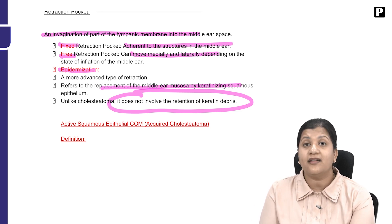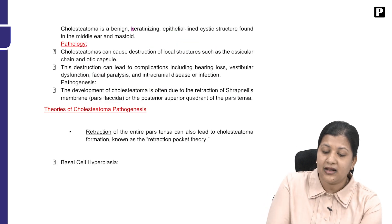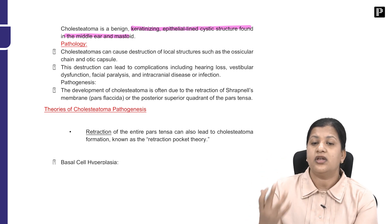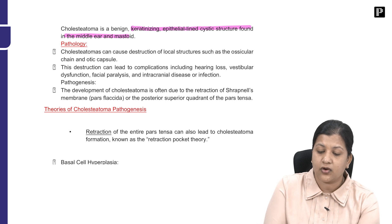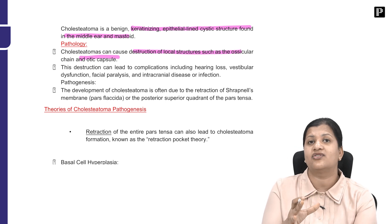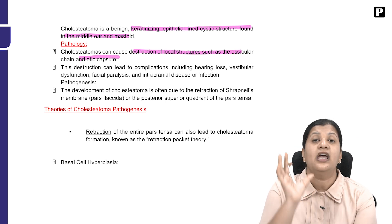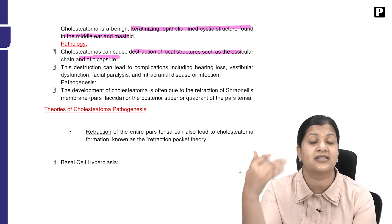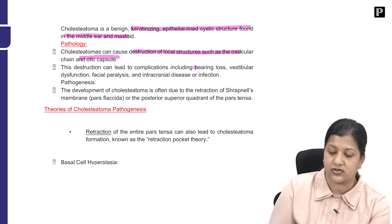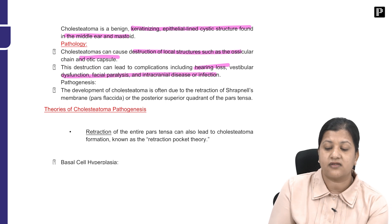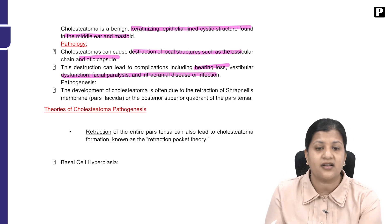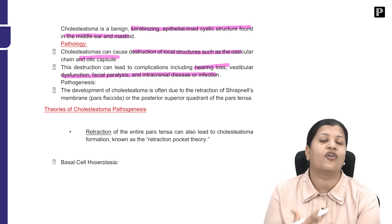In active squamosal disease, there is an epithelial-lined sac with keratin debris within the middle ear or mastoid — this is cholesteatoma. It can cause destruction of the ossicular structures, inner ear, and otic capsule. Unlike active mucosal disease, destruction here is not due to osteoclastic activity but due to production of proteolytic enzymes such as collagenase, acid phosphatase, alkaline phosphatase, and other proteolytic enzymes. Being a destructive disease, it can cause hearing loss, vestibular dysfunction, facial nerve involvement, intracranial involvement, labyrinthine involvement, and jugular or sigmoid sinus involvement — hence it is considered an unsafe disease.